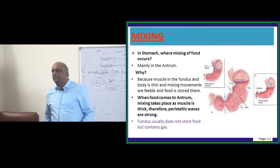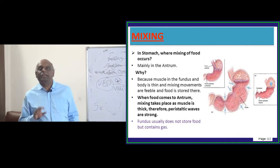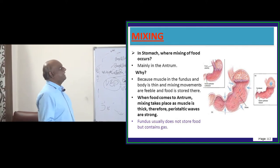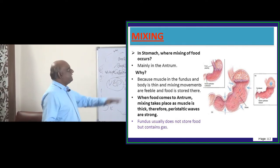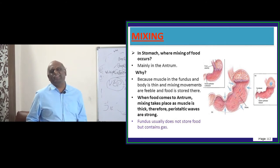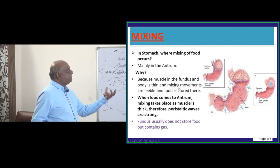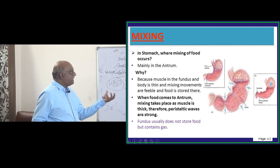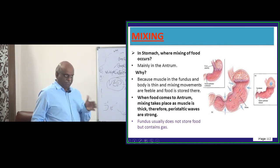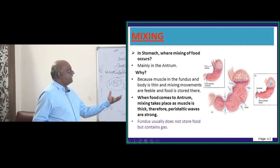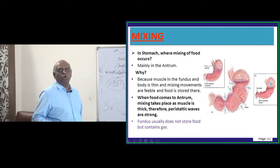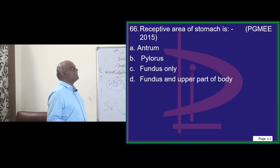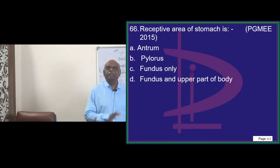Where does mixing occur predominantly in the stomach? It occurs in the antrum. Why in the antrum? Because the muscle in the fundus and the body are very thin and mixing movements are feeble. When the food comes to the antrum towards the pyloric part, the muscle is thicker and that leads to nice churning — the mixing movement.